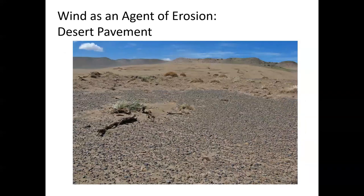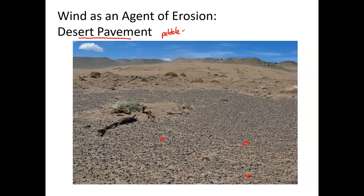As wind moves across the surface, it tends to pick up the finest particles most easily and leaves behind larger particles like little pebbles. In spots where a lot of this erosion has occurred, it leaves behind what we call desert pavement — the name for pebble-covered surfaces left behind because all of the fine sediments have been removed by wind. We see them pretty frequently in deserts.